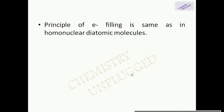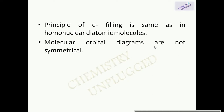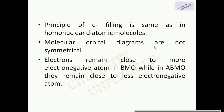The principle of electron filling in heteronuclear diatomic molecules is same as in homonuclear diatomic molecules. Molecular orbital diagrams are not symmetrical in nature because there is a difference in electronegativity of the atoms involved in molecule formation. Electrons remain close to the more electronegative atom in bonding molecular orbitals, while in antibonding molecular orbitals they remain close to the less electronegative atom.